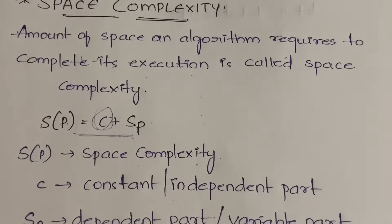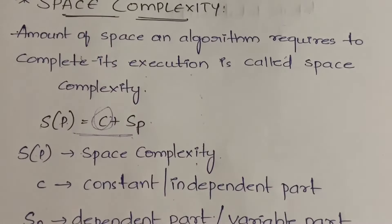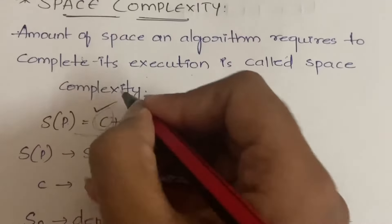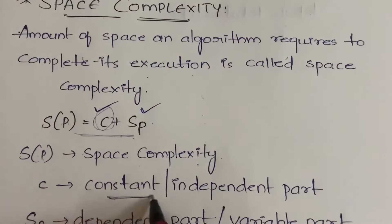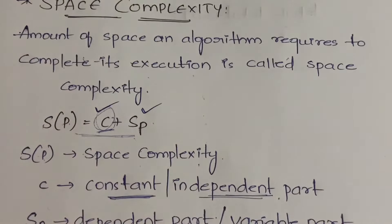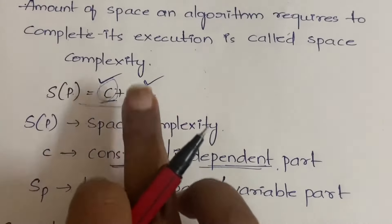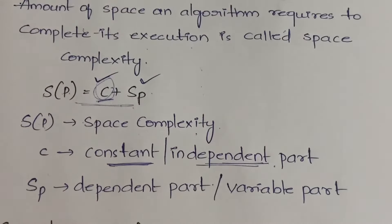In an algorithm, you will have a constant part as well as a variable part. Whatever constant parts are there will come under C. Whatever variable parts are there will come under SP. These C values are constant — they do not depend on any of the other variables. Whereas SP is changing and it depends on the other variables. It is the variable part, also called the dependent part.